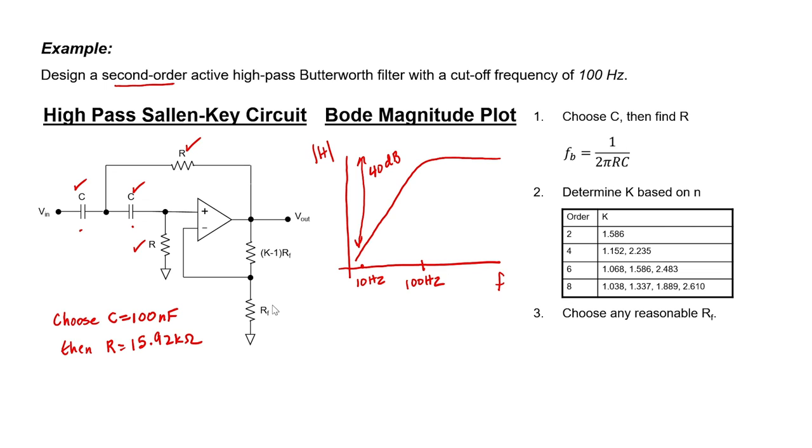As for the feedback resistor, we can again choose 10 kOhms. And because we have a second-order filter, I know what K is. Now that we know the value of every component in the circuit, that completes the design of the high-pass filter.